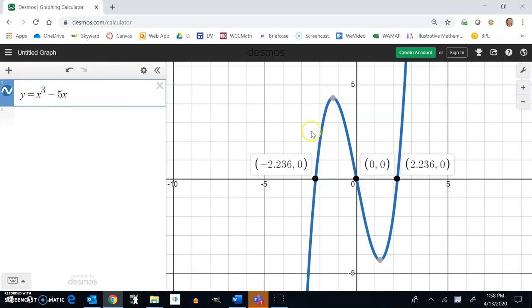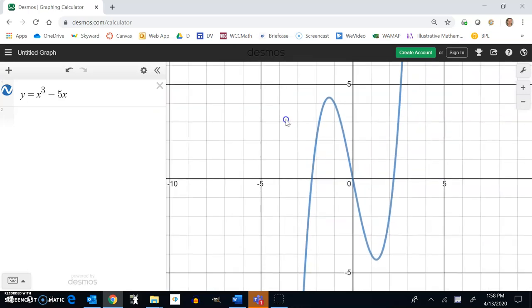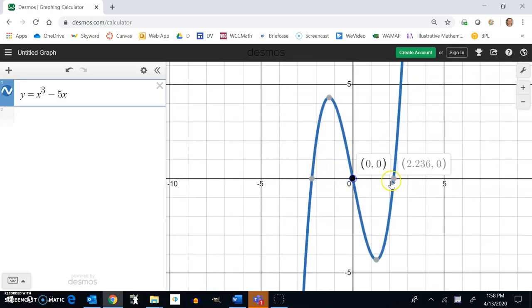Three is the most I'm going to get for my number of x-intercepts, or my number of zeros. I could not get more, but I could get less.